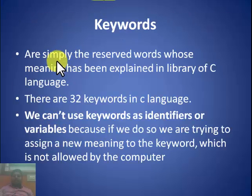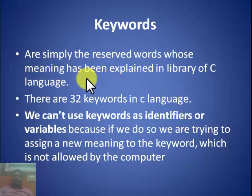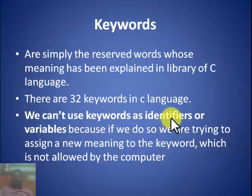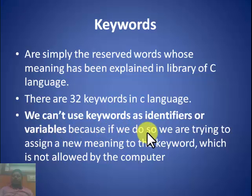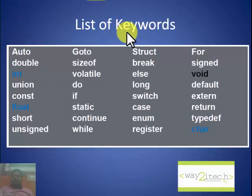Next are keywords. Keywords are simply reserved words whose meanings have been defined in the C library. They are similar to words in a dictionary where all meanings are predefined. There are a total of 32 keywords in C language. We cannot use keywords as identifier names or variable names, because doing so would attempt to assign a new meaning to the keyword, which is not allowed.